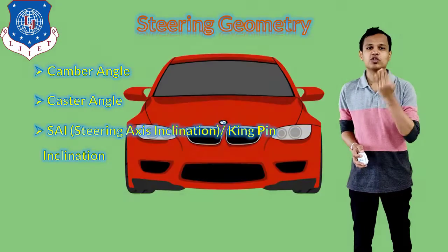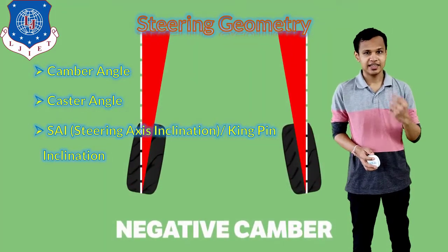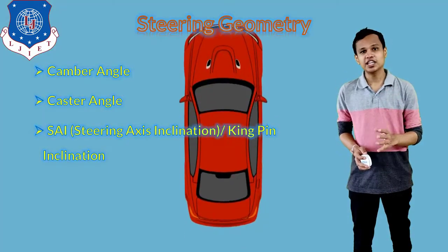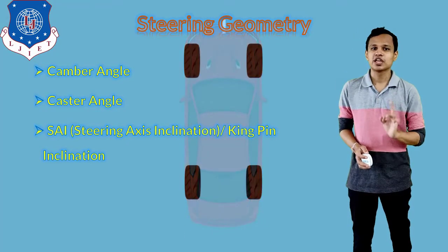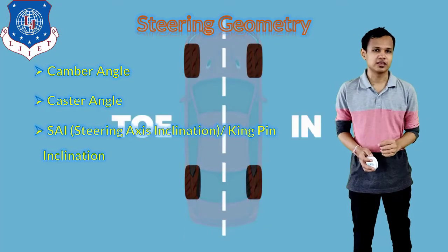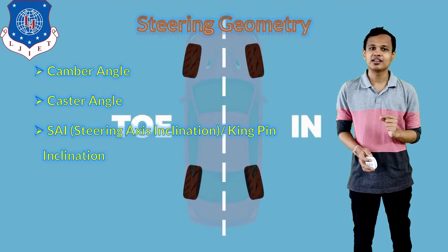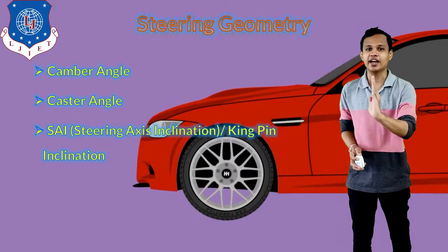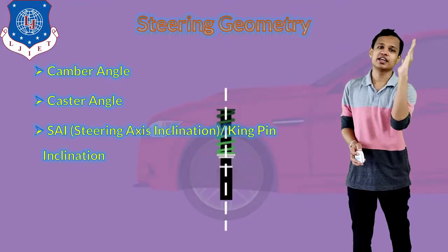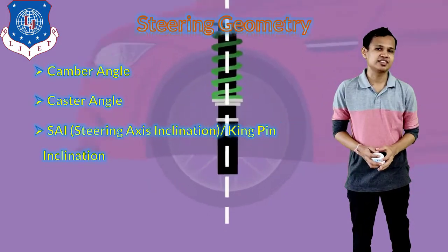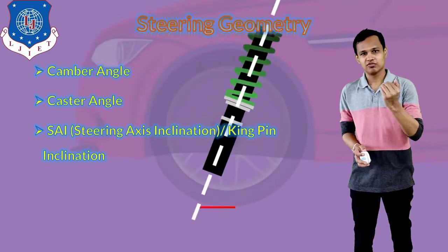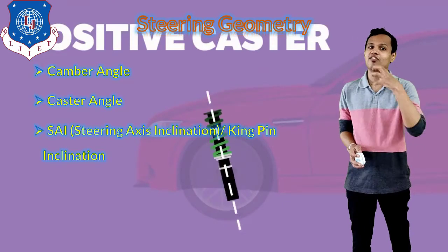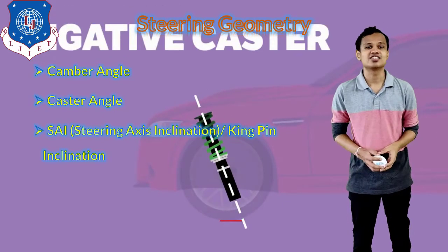Beyond that, the whole system includes steering axis inclination. The steering axis inclination is the same steering axis we measured in case of the castor, but steering axis inclination is measured when we see the steering axis from the front side. We will also see further what is steering axis inclination, why it matters, and how it can be adjusted.